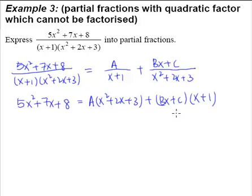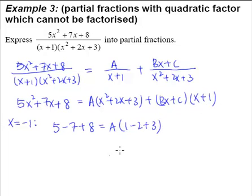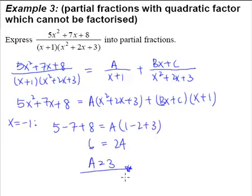We flatten the equation and the next thing is to solve for A, B, and C. Analyzing the equation, when we substitute x = −1, this entire bracket becomes 0, and 0 multiplied by anything gives 0 — so we can find A. Substituting x = −1 on the left-hand side: 5 − 7 + 8 = 6. On the right-hand side we are left with 2A, therefore A = 3.